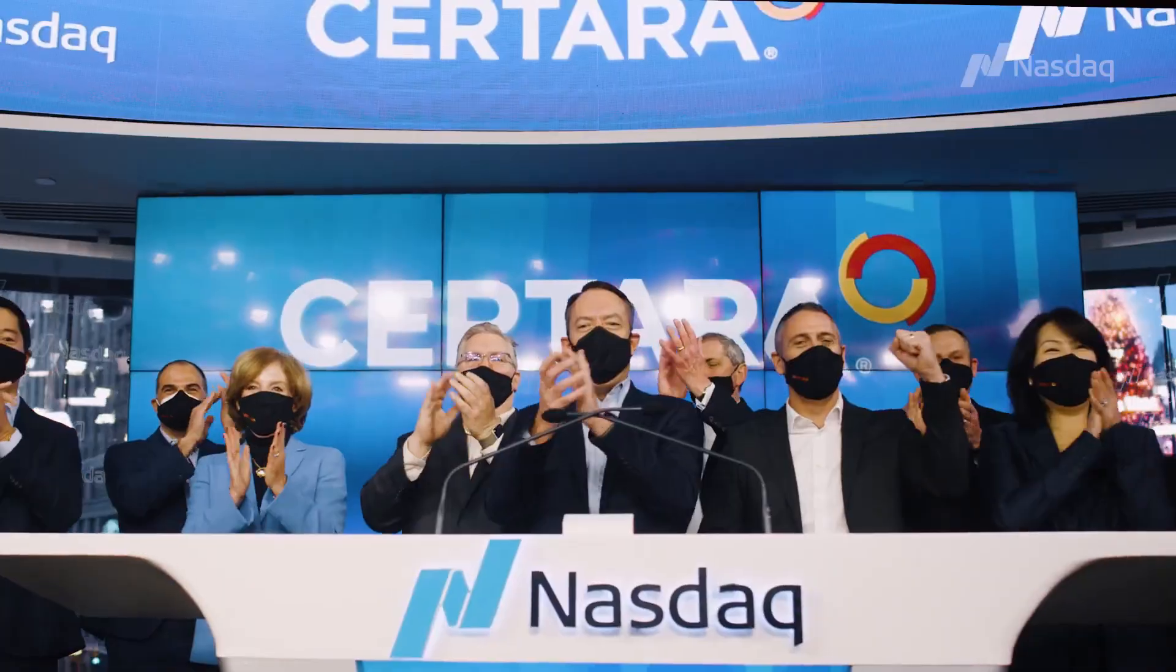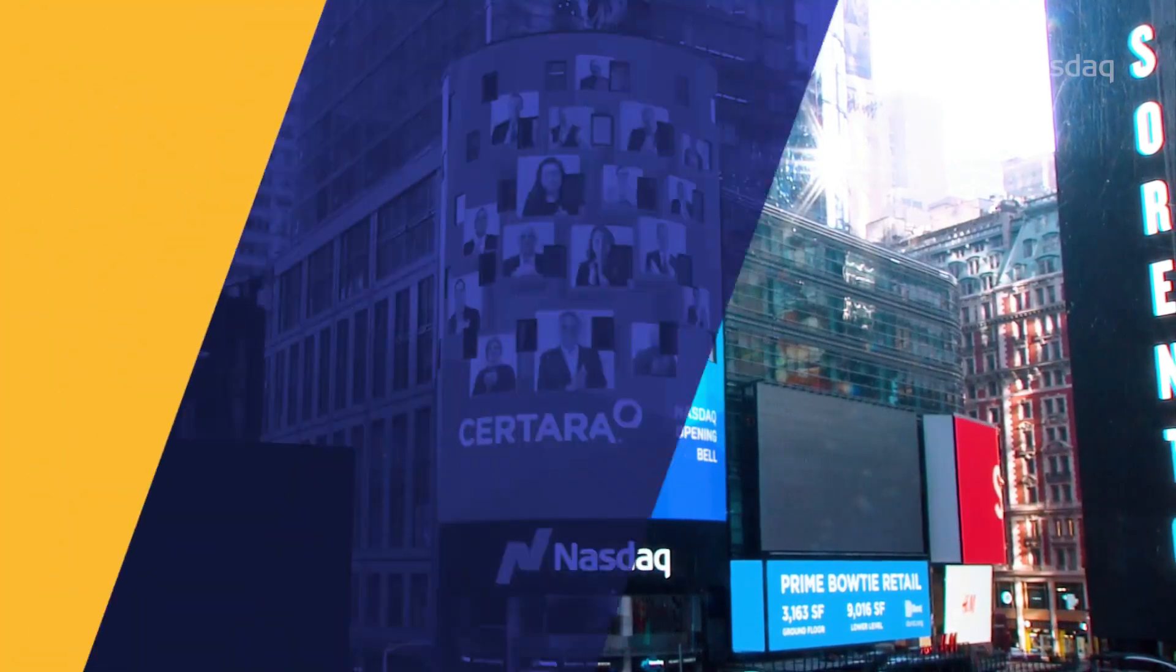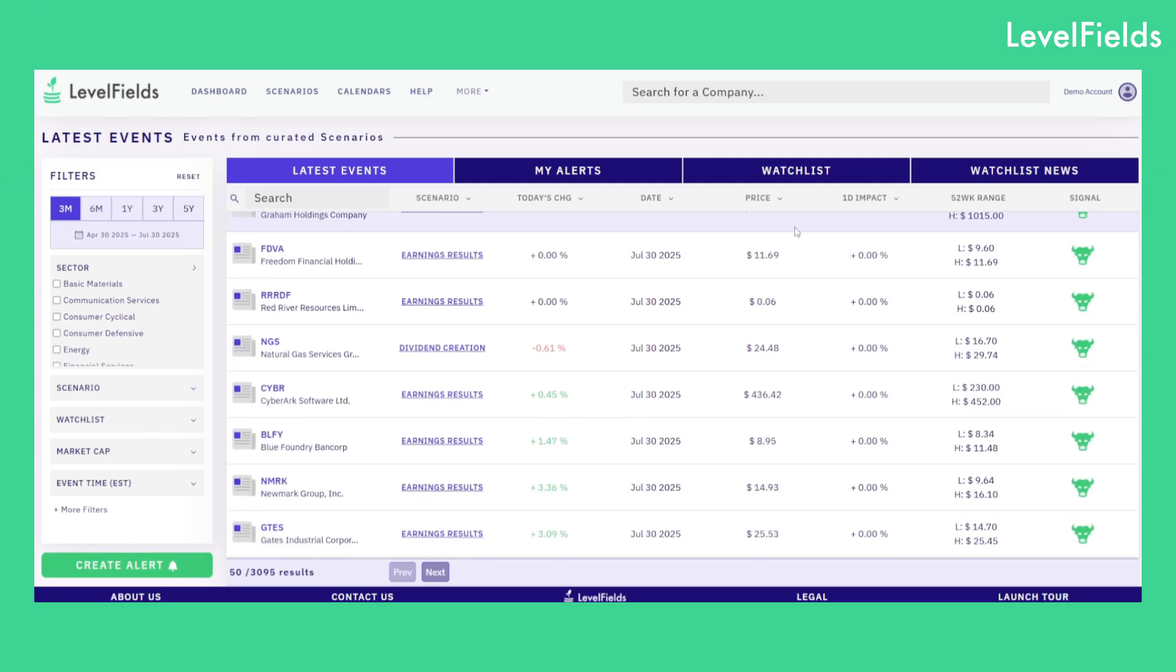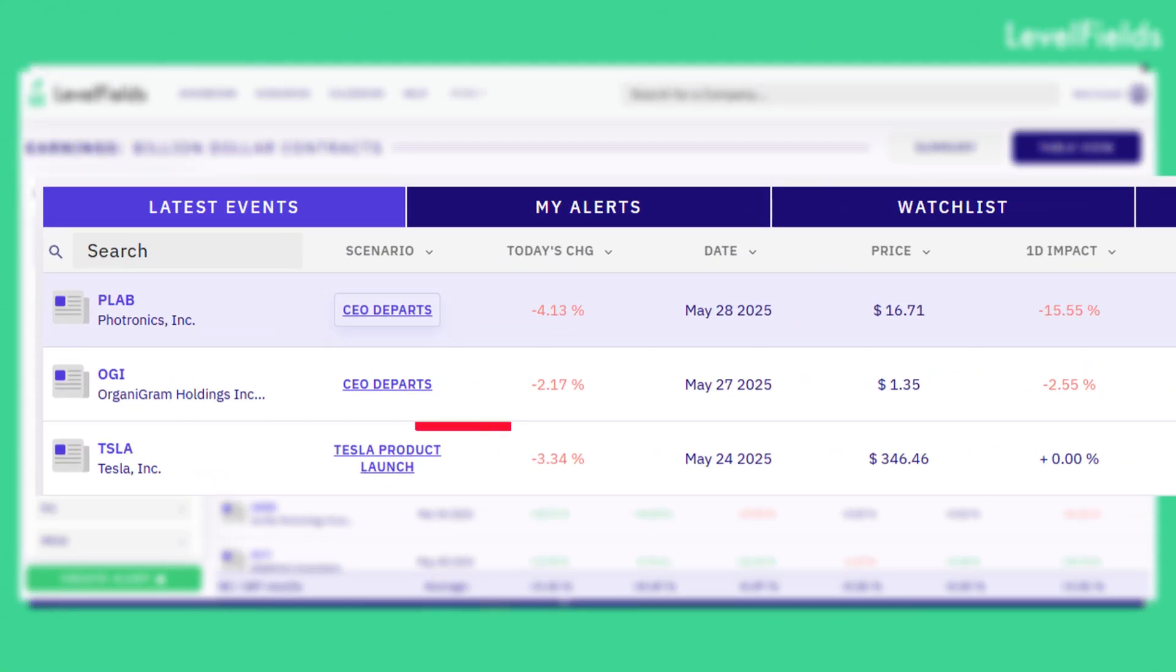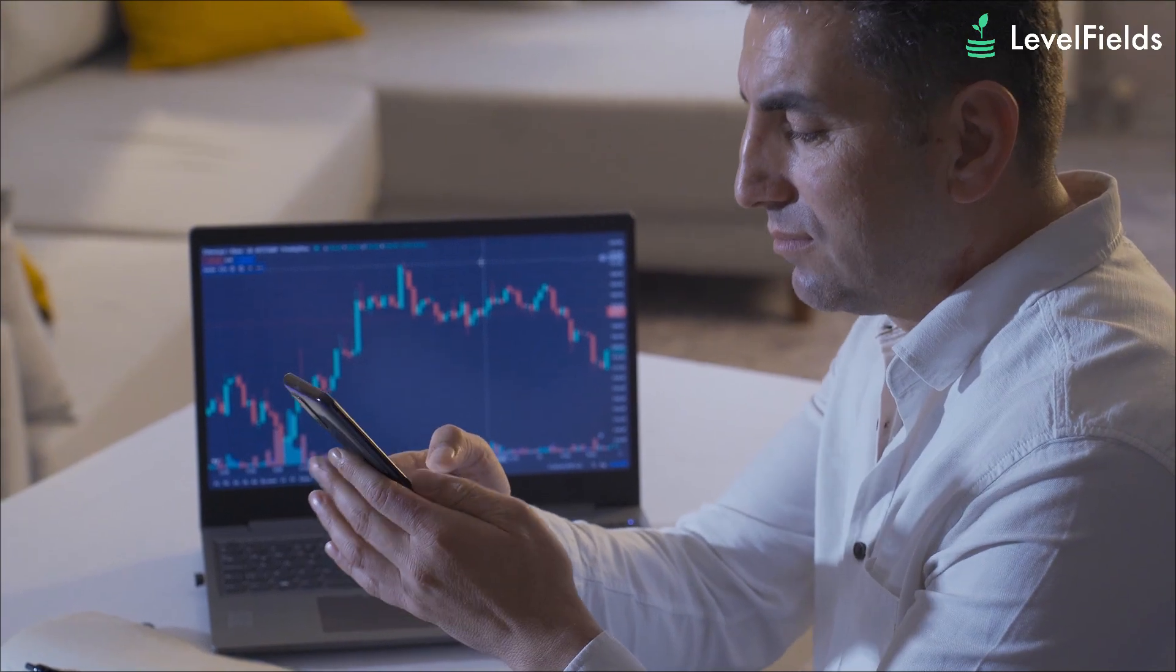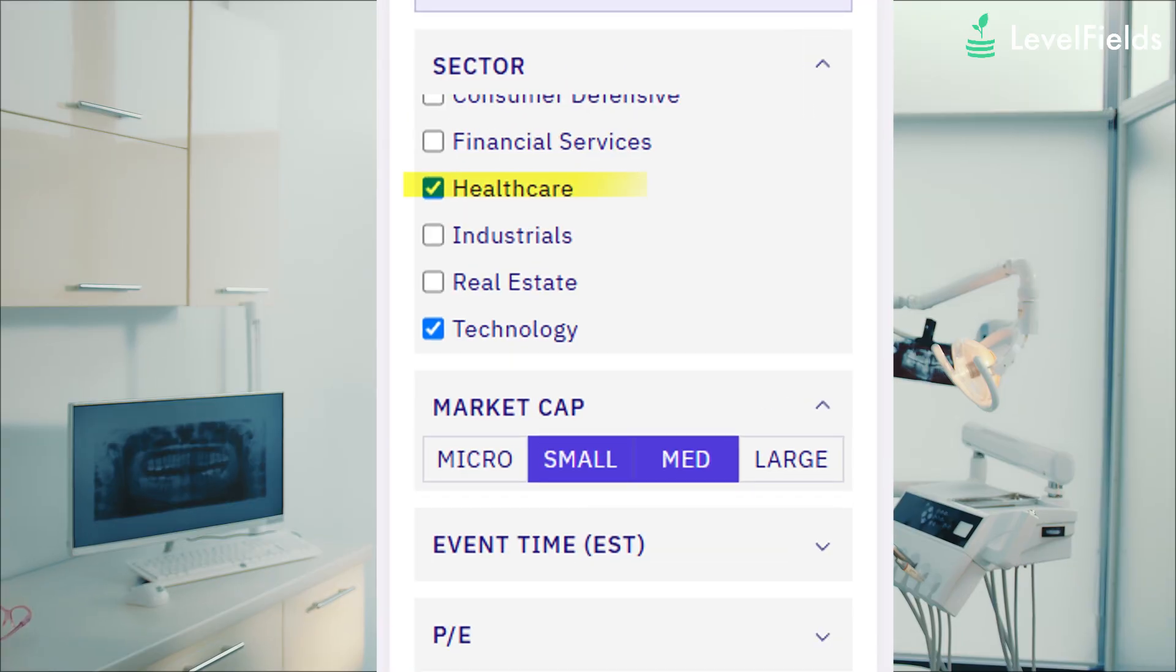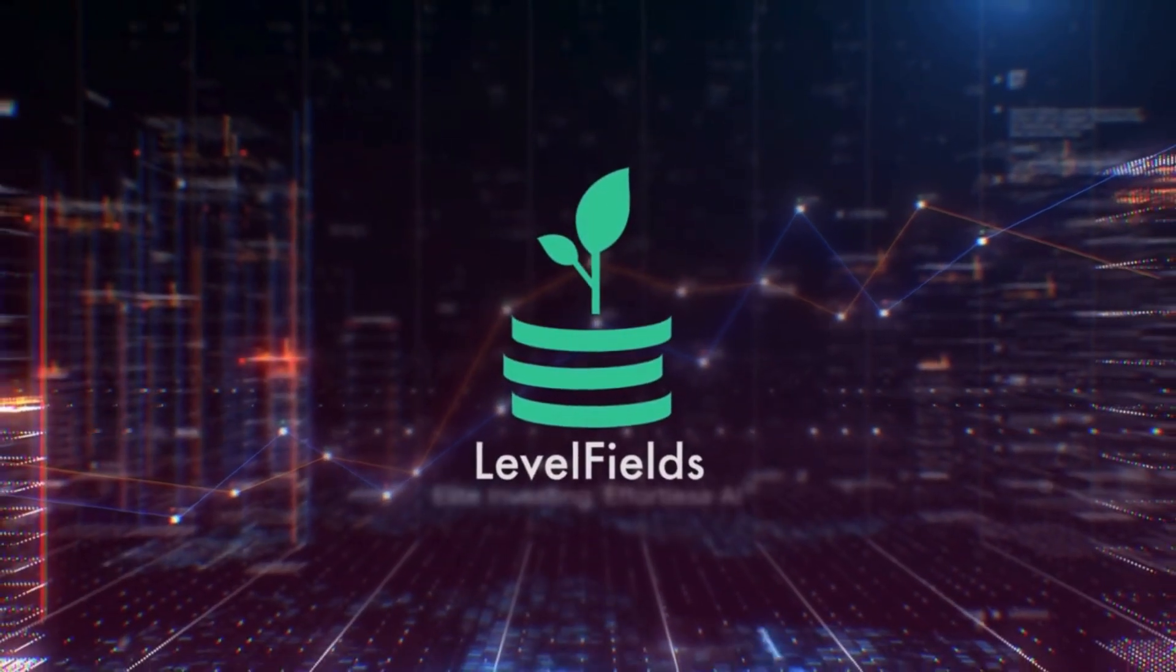Finding stocks like GE Healthcare, Certara, or Recursion right as they make pivotal announcements can be the difference between catching a breakout move and missing it. That's where Levelfield's AI comes in. The platform scans thousands of company events, earnings surprises, FDA approvals, billion-dollar contracts, leadership changes, and product launches, and alerts you in real time when an event is likely to move a stock. Instead of sifting through endless news feeds, you can focus only on the events that matter and act decisively. That's why traders and long-term investors alike are using Levelfield's AI to track healthcare catalysts and build smarter positions. Follow and subscribe for more Levelfield's Elite Investing, Effortless AI.